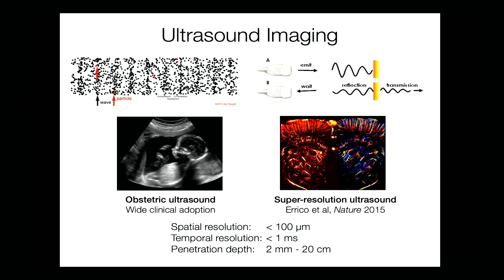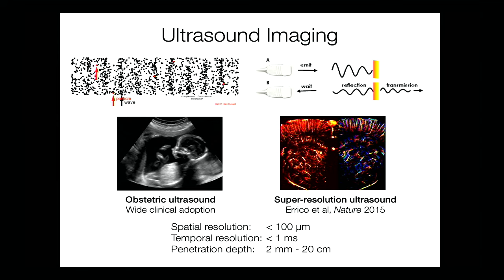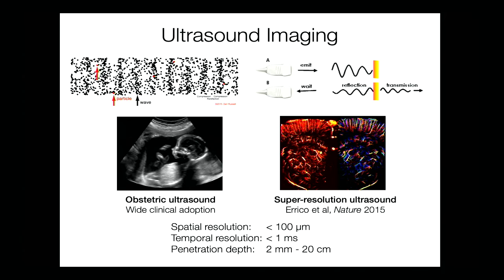A beautiful illustration of what modern ultrasound can do comes from our collaborators in Paris, Mikhail Tanter's group. What you're looking at here is a rat brain in cross-section, showing microvasculature resolved at seven-micron spatial resolution throughout a several-centimeter-sized volume. This uses a super-resolution approach analogous to what's been used in optics. So modern ultrasound is capable of quite a lot — but here we're looking at anatomy, and we want to get towards cellular function.